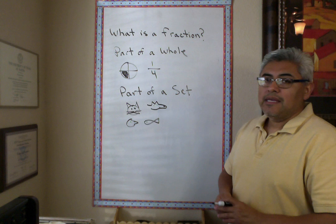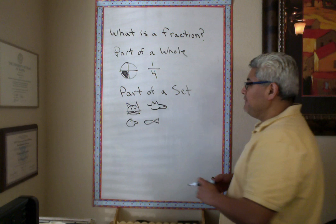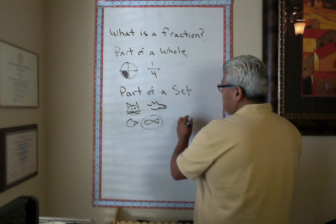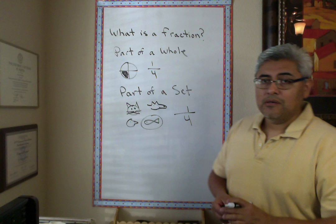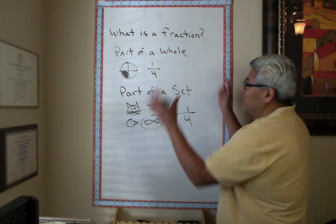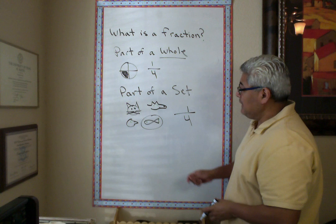And, if I ask you how many fish do I have? You can circle it. So, that's the question. I have one fish out of four pets. So, that's what a fraction could be. A fraction could come from a whole, and cut into pieces. Or, it can come from a set, a group, and then you just count what they're asking.